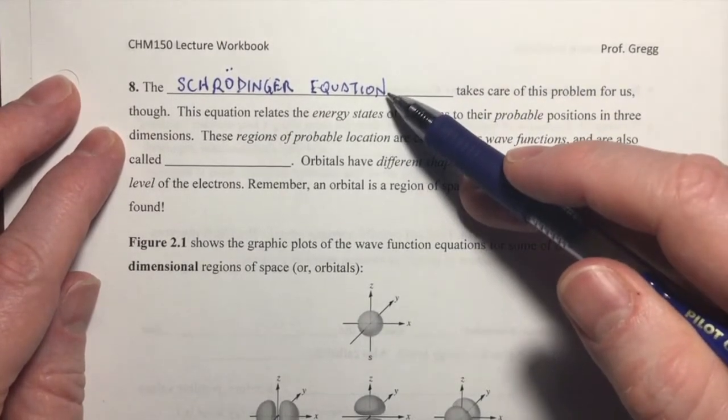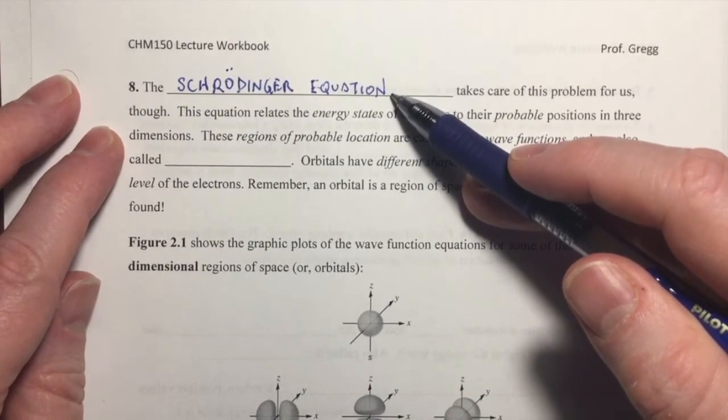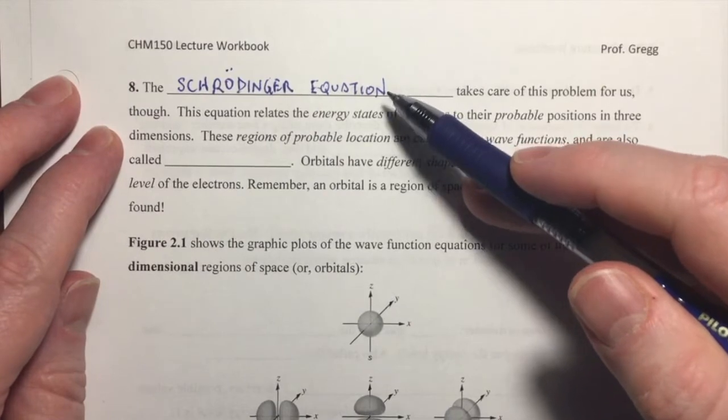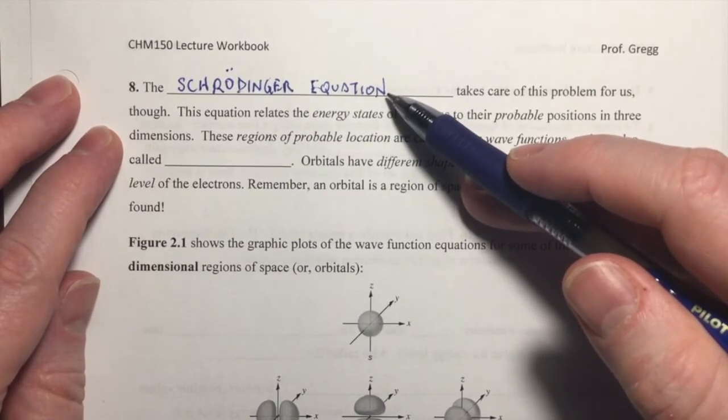Now, the Schrödinger equation is some fairly complex math, and we're not going to get into the complex math. But I do want you to know what it's called. It's the Schrödinger equation.